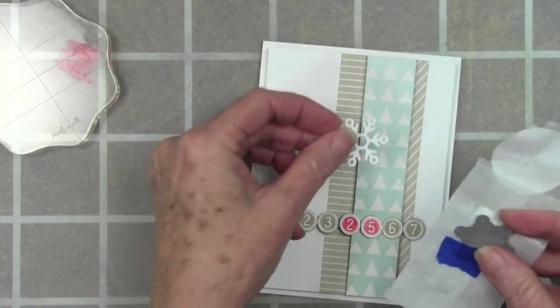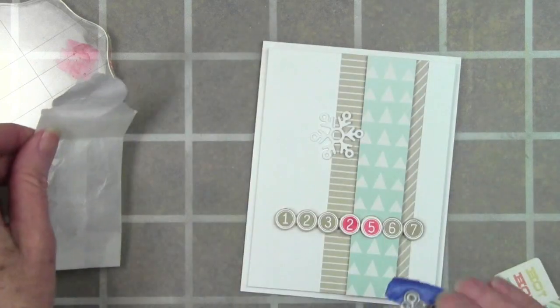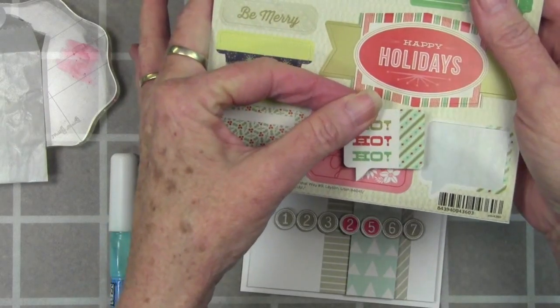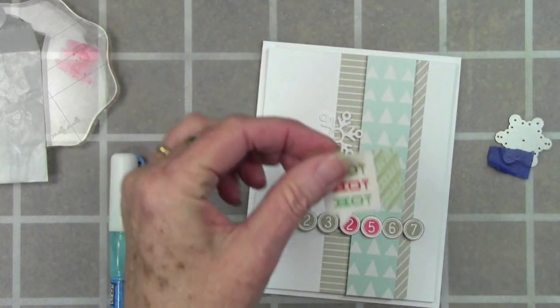I have die cut a white snowflake which is also included in the kit and used my die cut machine. Next I'm using one of the Basic Grey stickers and this one says Ho Ho Ho and I've added some foam squares to the back.